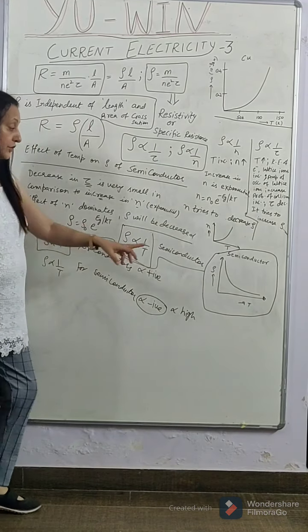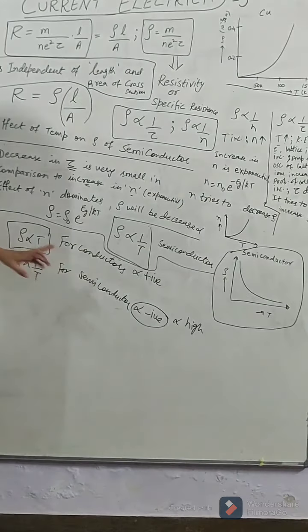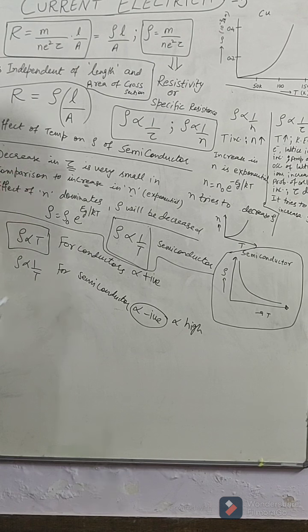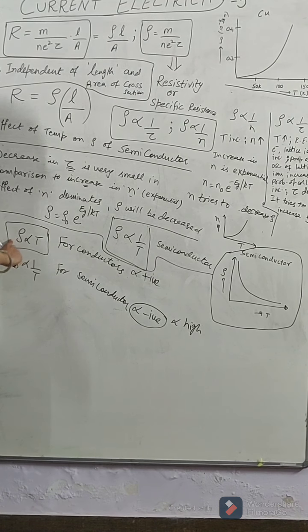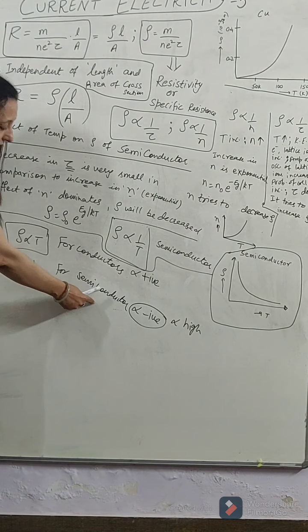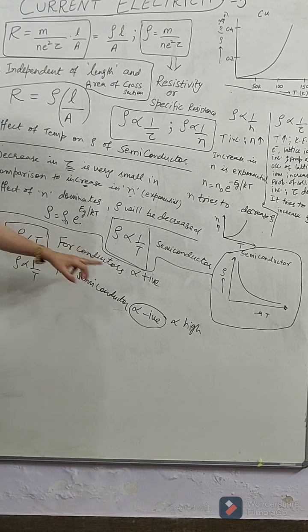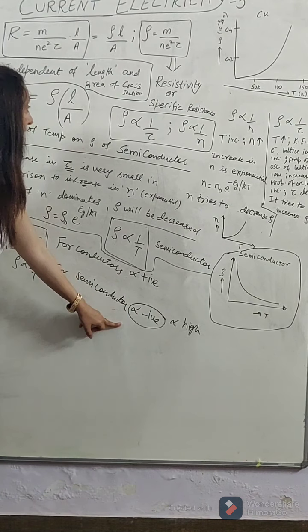So, resistivity decreases exponentially with the increase in temperature. So, the major conclusion of today's video is that for conductors resistivity increases with temperature and for semiconductor resistivity decreases with temperature. So, alpha is positive for conductors and alpha is negative for semiconductor.